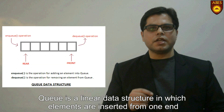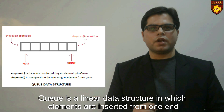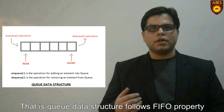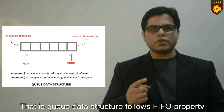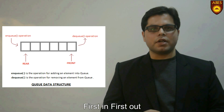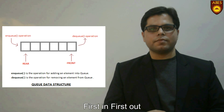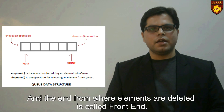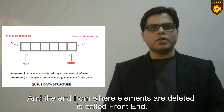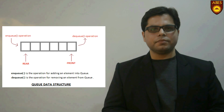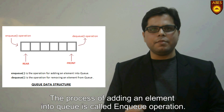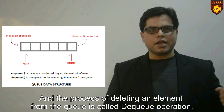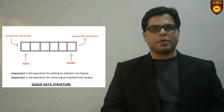Queue is a linear data structure in which elements are inserted from one end and deleted from another end. Queue data structure follows FIFO property — first in, first out. The end from where elements are inserted is called the rear end and the end from where elements are deleted is called the front end. The process of adding an element into a queue is called enQueue operation and the process of deleting an element from the queue is called deQueue operation.